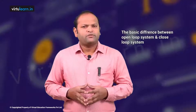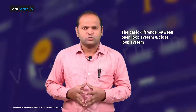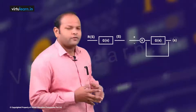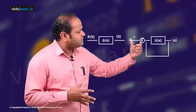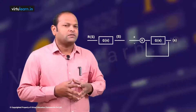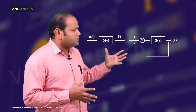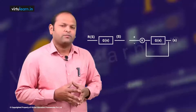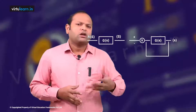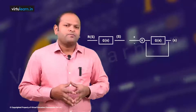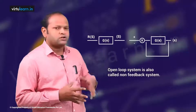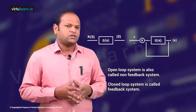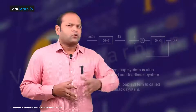We know the basic difference between the open loop system and closed loop system. If you look at the block diagrams of open loop and closed loop, from the first instant we can say that the difference is the feedback. In open loop system the feedback is missing; in closed loop system there exists a feedback. This open loop system is also called a non-feedback system and the closed loop system is a feedback system.